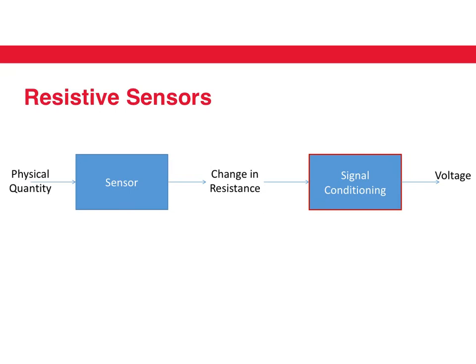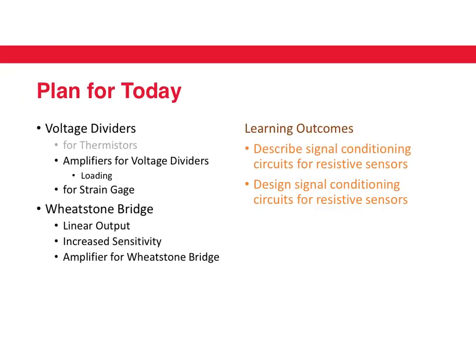We'll take a look at some such circuits, but before that let's look at the plan for the day. We want to look at voltage dividers — which is one of the ways in which you can convert a resistance into a voltage. We're going to look at amplifiers for voltage dividers, then voltage dividers for strain gauges, and then the Wheatstone bridge and a few things associated with the use of Wheatstone bridges.